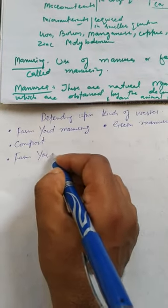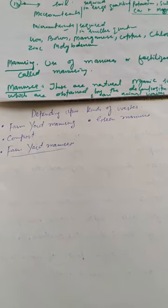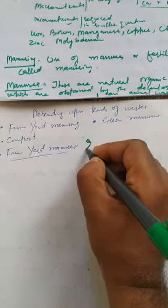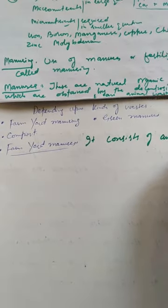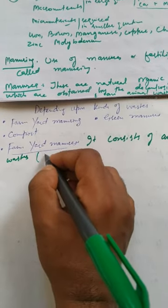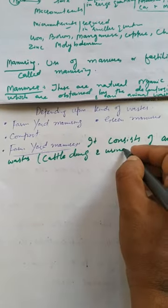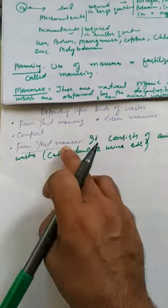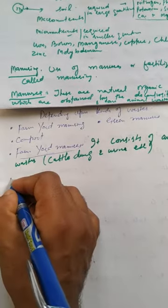Farm yard manure consists of animal wastes, particularly cow dung and animal urine. These animal wastes are decomposed and then used as manure. So farm yard manure is the first type of manure.